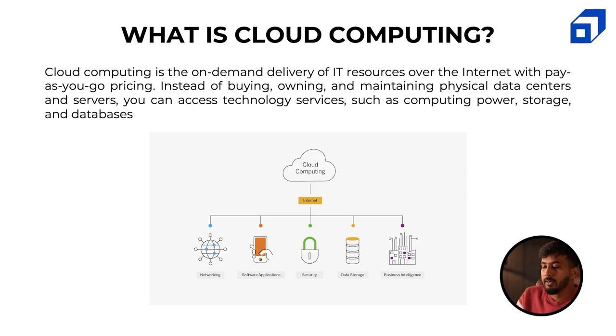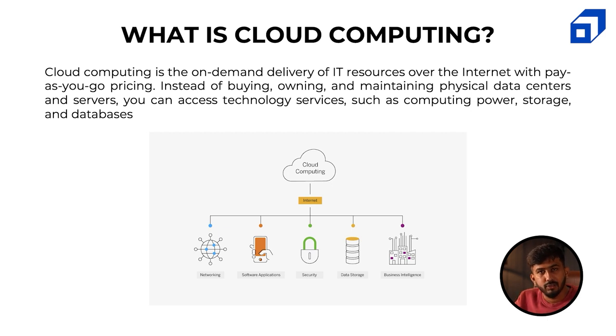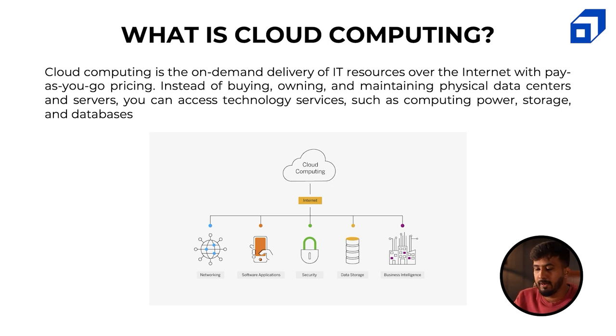AWS has its own set of services, and GCP is more of an open platform where all kinds of services work, because Google has a hand in many open source projects like Kubernetes and Docker. So basically, cloud computing means renting infrastructure from another company like Google, instead of buying and owning your own.